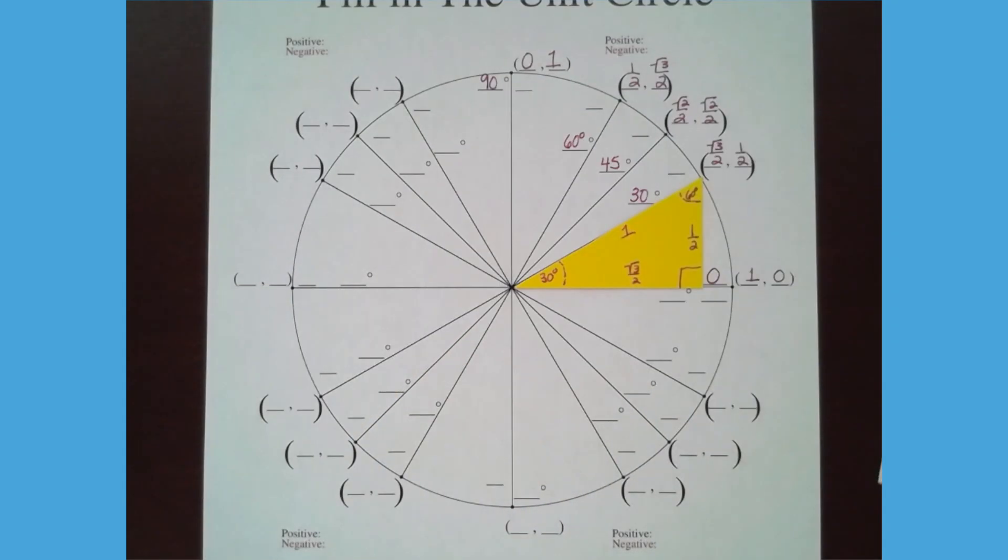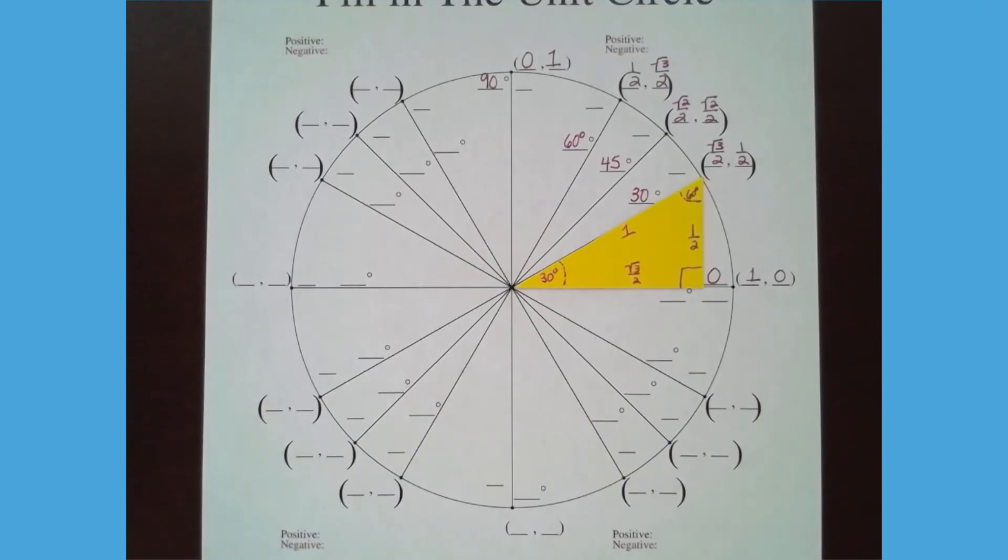All right, so here we go. This is so cool, so much fun. What I need you to understand is that by filling out the first quadrant, we're almost done with the circle even though there's three more quadrants to go, because the rest of the circle is all symmetrical. Let me show you what I mean.